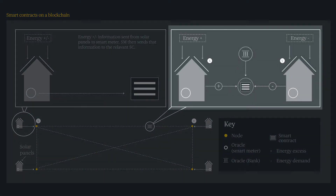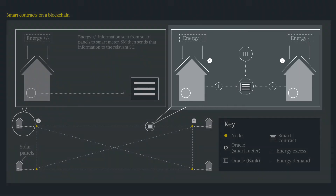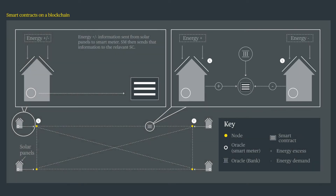The 'if' is based on three inputs: if X has energy surplus, and if Y has energy shortfall and pays for that energy shortfall at a given price written into the computer code, then self-execute and do the output — X transfers the energy to Y. This assumes that the actual transfer of energy takes place off-chain, outside of the blockchain network, but the fact that it happened is recorded onto the blockchain network.